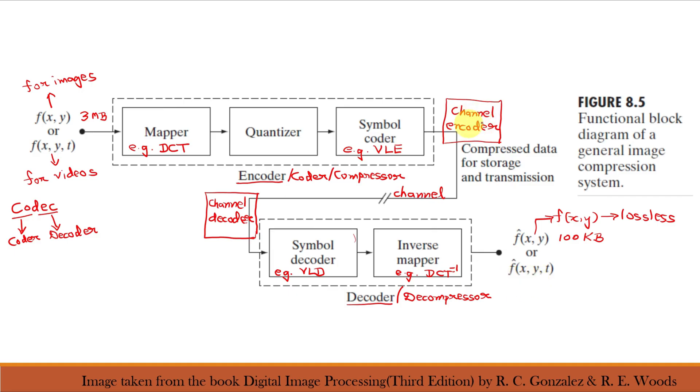The channel encoder and decoder play an important role in overall encoding decoding process when the channel is noisy or prone to error. They are designed to reduce the impact of channel noise by inserting a controlled form of redundancy onto the source encoded data. As the output of the source encoder contains little redundancy, the size is small and it would be highly sensitive to transmission noise without the addition of this controlled redundancy. We know in communication channels, the low signals are more prone to channel noise, so little redundancy is added.